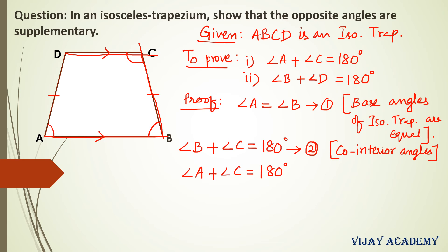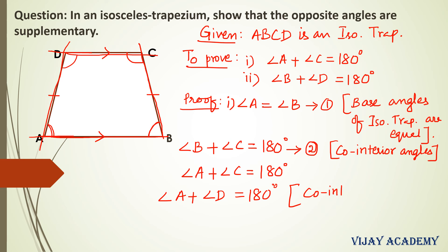So we got the first proof. Similarly, let me go to the second proof: angle B plus angle D equals 180 degrees. For the same pair of parallel lines, AB is parallel to CD, let us now take AD as the transversal. When AD cuts AB and CD, we get the co-interior angles A and D. So let me write angle A plus angle D equals 180 degrees. The reason is co-interior angles are supplementary. Let this be equation 3.